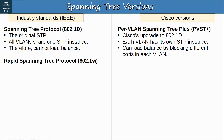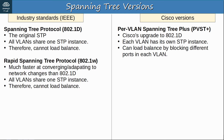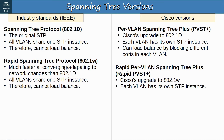This was solved in rapid spanning tree protocol, IEEE standard 802.1w. It is much faster at converging and adapting to network changes than 802.1d. However, just like 802.1d, the industry standard rapid spanning tree protocol runs only one STP instance shared by all VLANs, so it also cannot load balance. Cisco once again developed an improved version — rapid per VLAN spanning tree plus, or rapid PVST+. It is Cisco's upgrade to 802.1w, featuring the improved speed of rapid STP plus a separate STP instance for each VLAN, so it can load balance by blocking different ports in each VLAN.